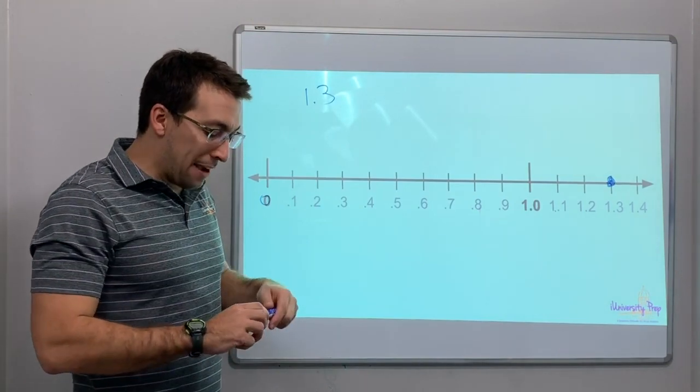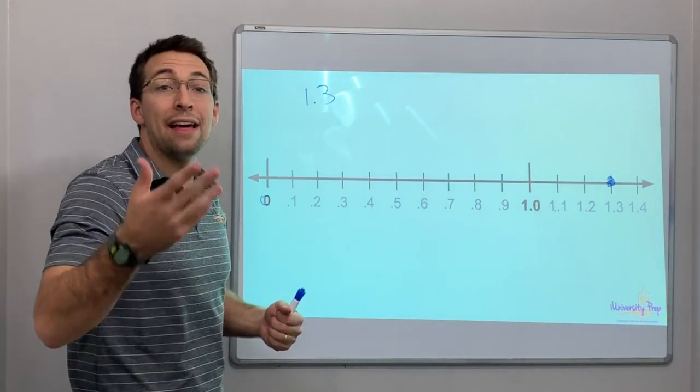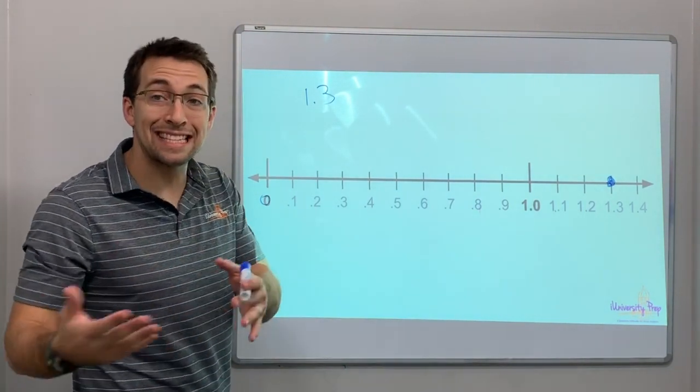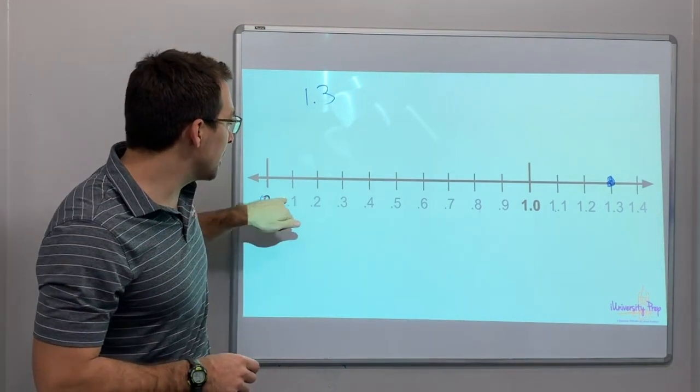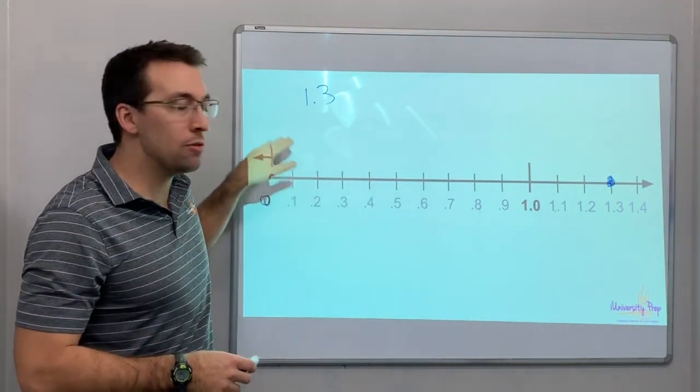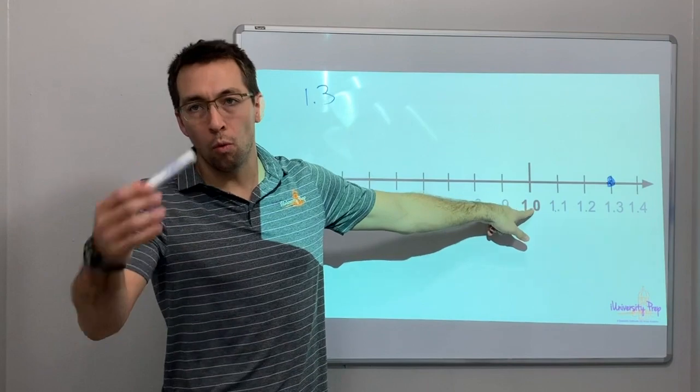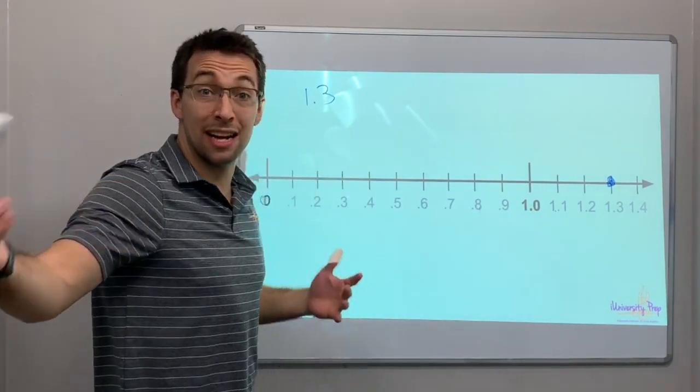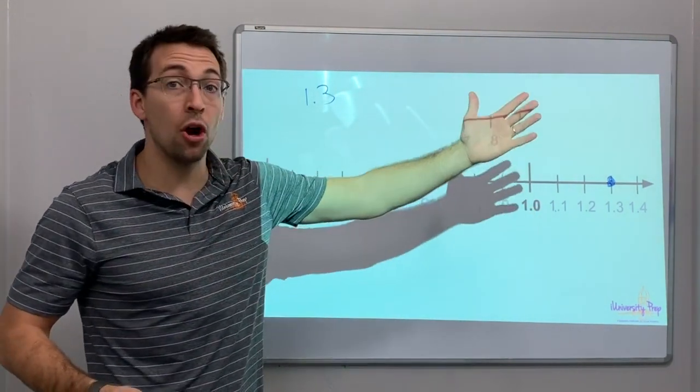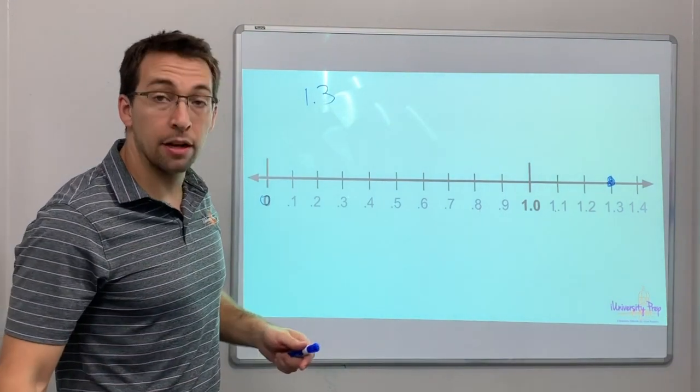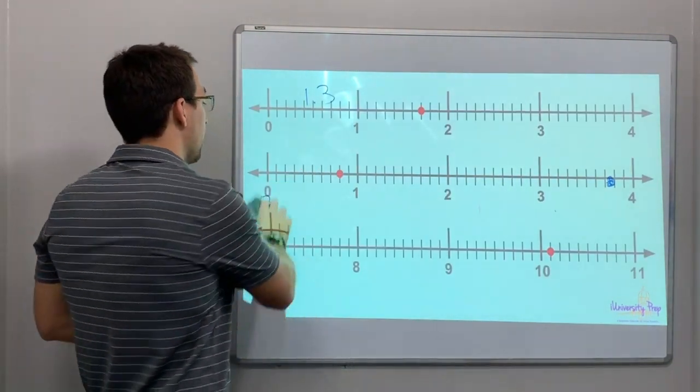Now notice, if you have 10 dimes, you have a dollar. If you have 11 dimes, you have a dollar and 10 cents. Just because you're going by tenths doesn't mean you can't increase past 1 or past 2 or past the next whole number. It keeps going. It keeps going to infinity.